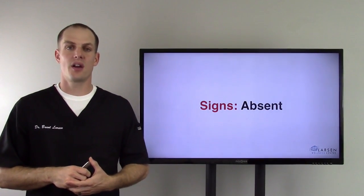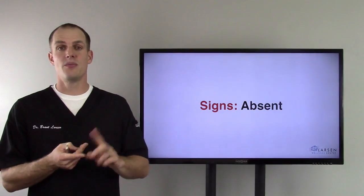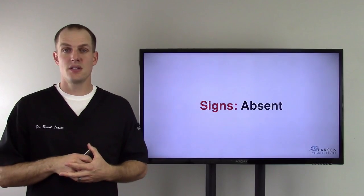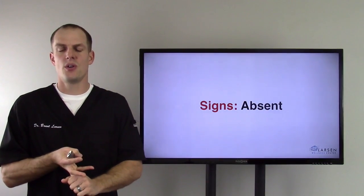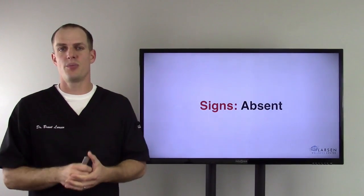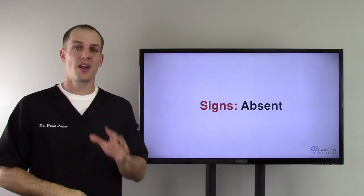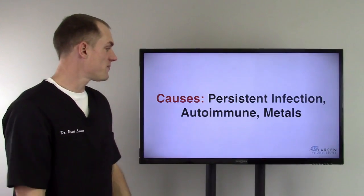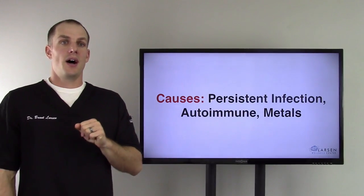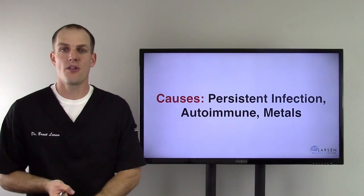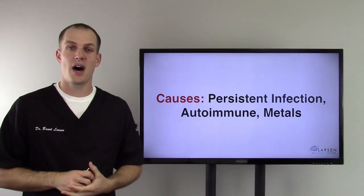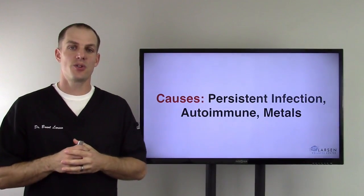You take any named and blamed condition out there today and the roots of it will be chronic inflammation. It doesn't matter what it is. Heart disease, diabetes, Alzheimer's, dementia, Parkinson's, ADD, ADHD, autism, weight loss resistance, any hormone issue. The root of it is chronic inflammation. That's why this video is so incredibly important that you understand this process that we're going to dive deep into here in a second.